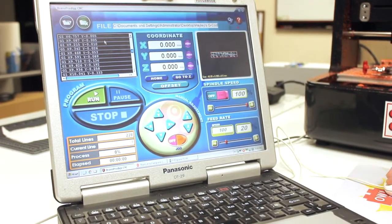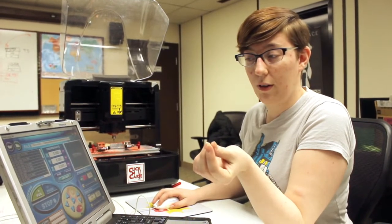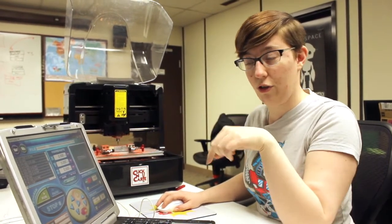The G-code all is shown here, and when you run a cut, it actually scrolls through. G-code is coordinates, so every line is a new set of coordinates, and it's telling the bit to go from here to here to here to here, and that's how you're drawing your shapes.